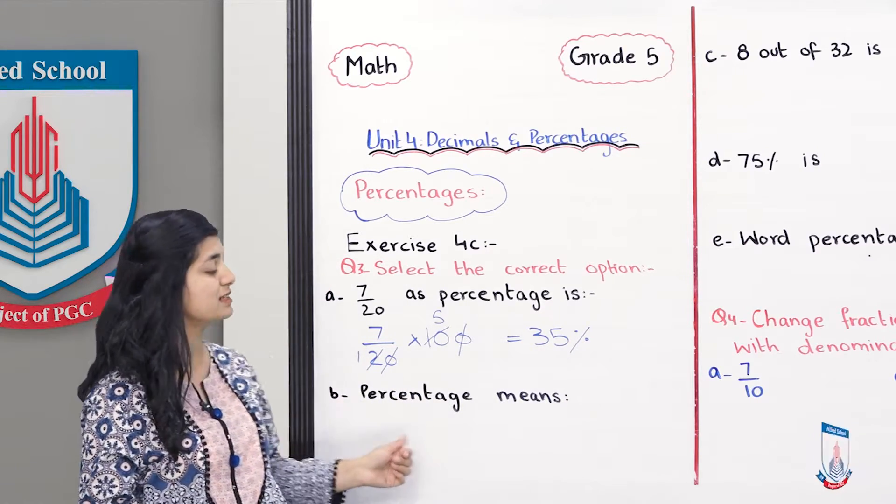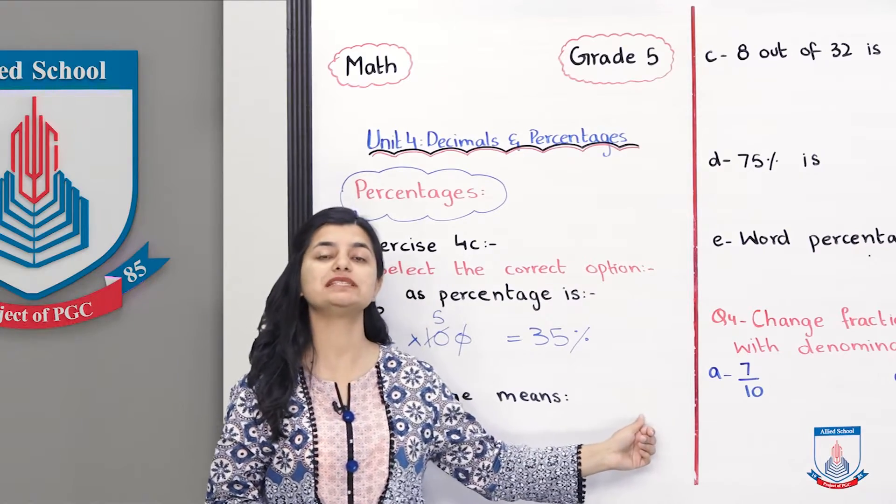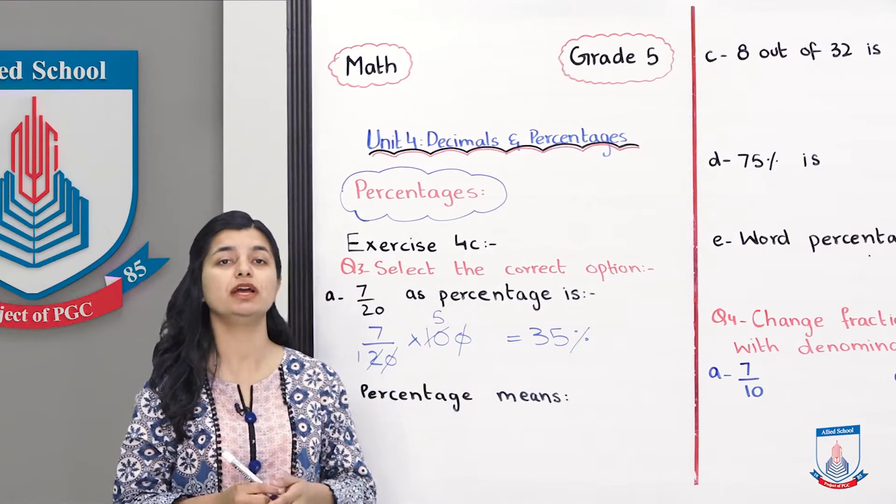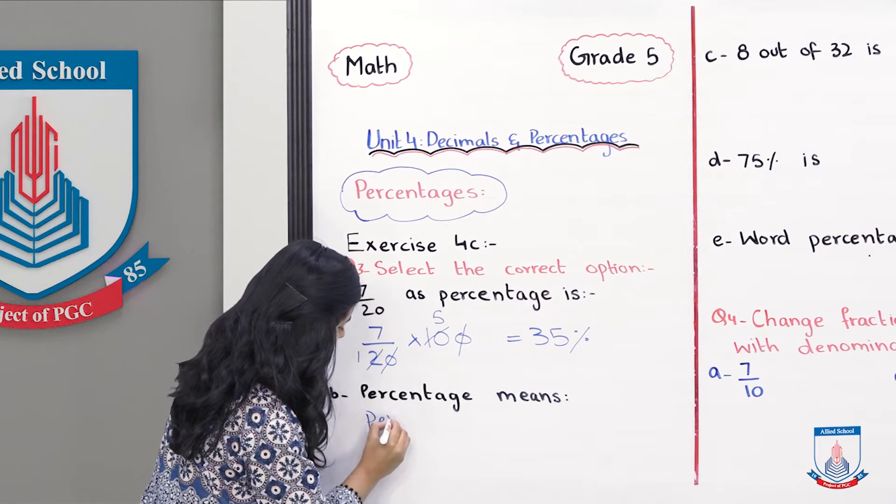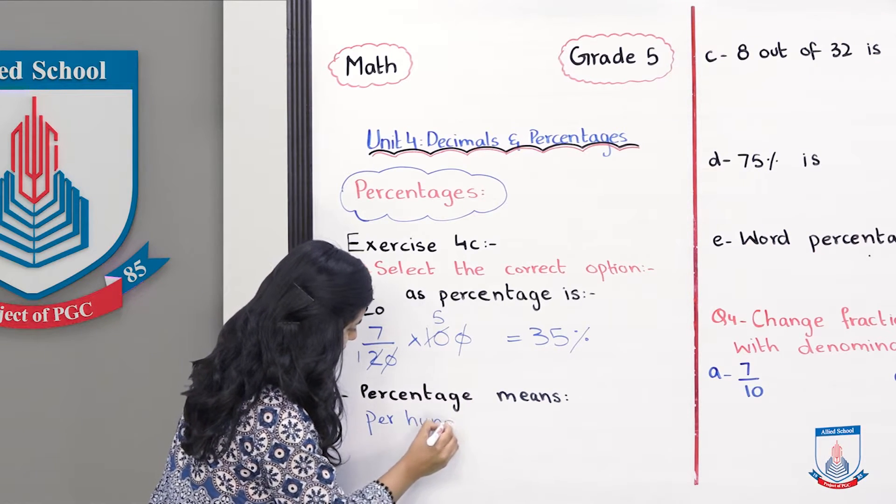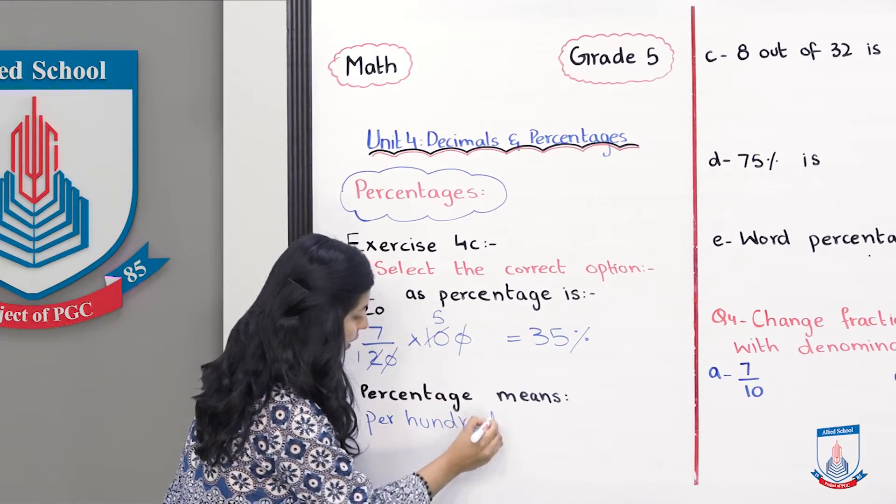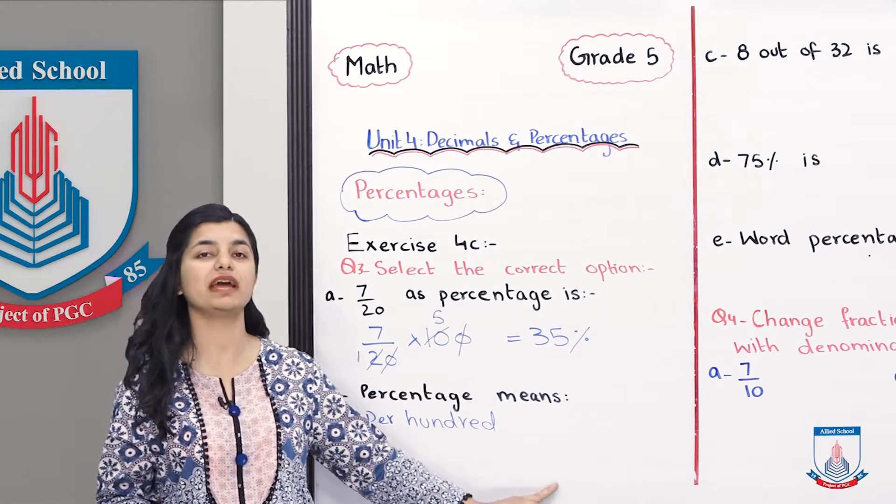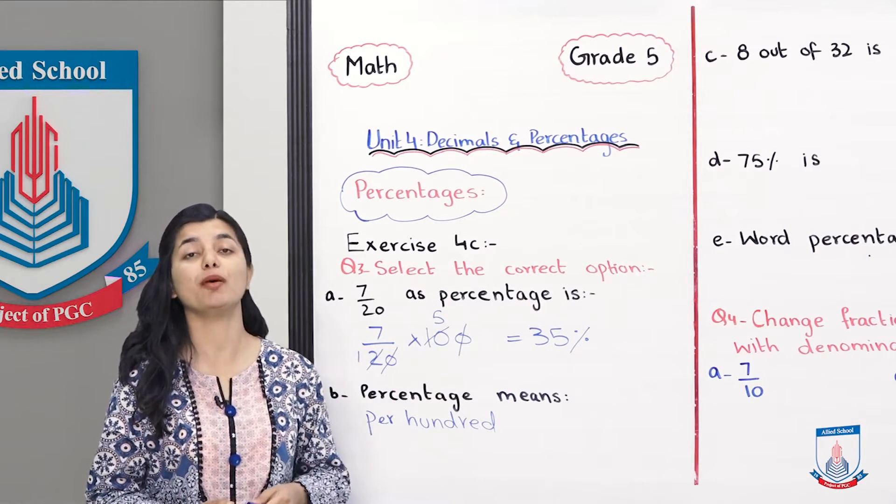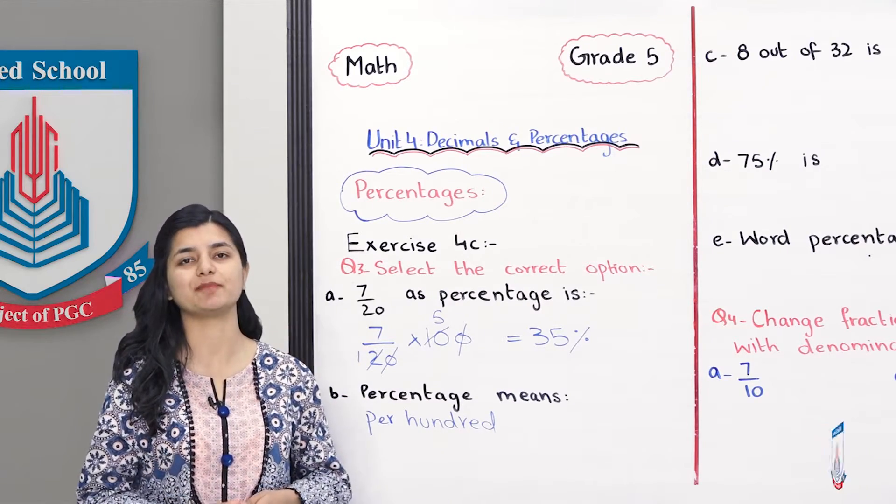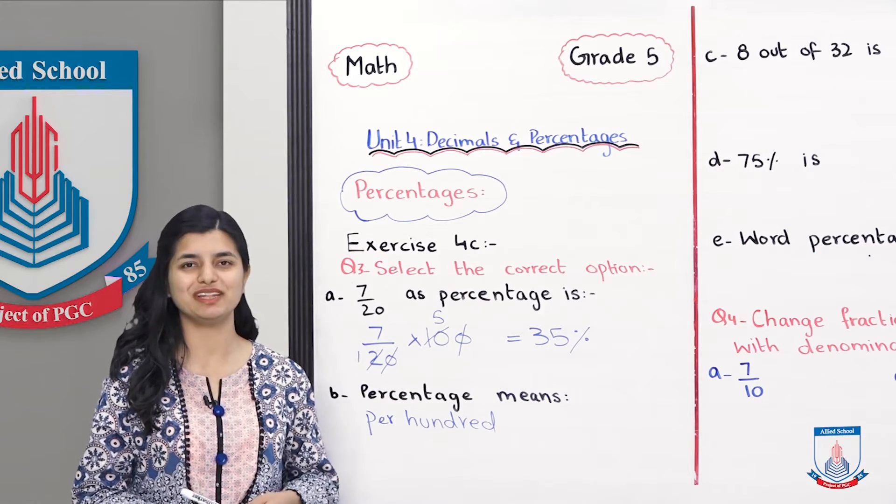B part hai percentage means. Ab unhone options di hoi hai per thousand, per tens, per hundred. So hume pata hai ke percentage means per hundred ya out of hundred. Every time jab aapko koji cheez percentage ki surat mein dee jaati hai, uske niche denominator jo hai woh hameesha hundred aata hai.